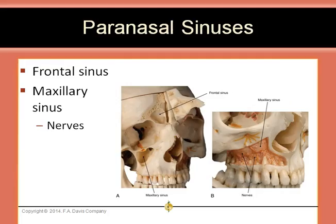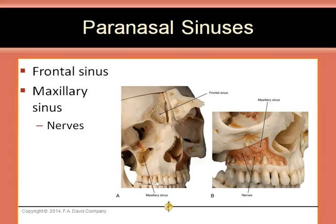This image shows the frontal sinus, which is located in the frontal bone, and the maxillary sinus, which is located in the maxilla. Nerves that innervate the maxillary teeth are located in the anterior wall of the maxillary sinus. Therefore, pain from maxillary sinus infections can be referred to the maxillary teeth.